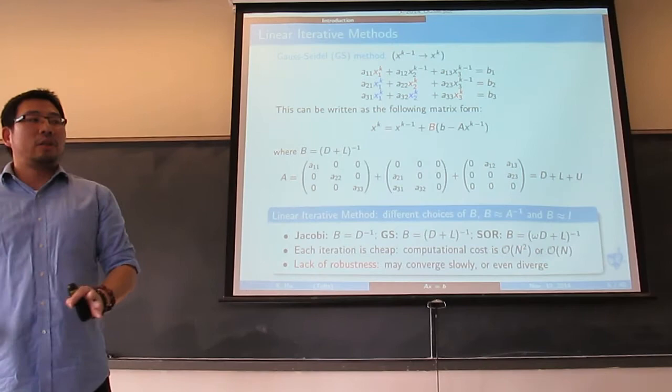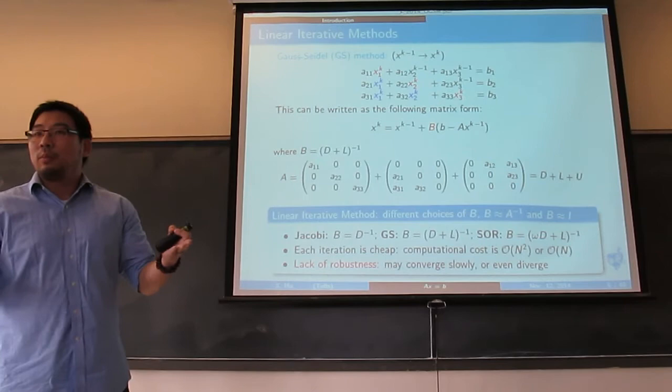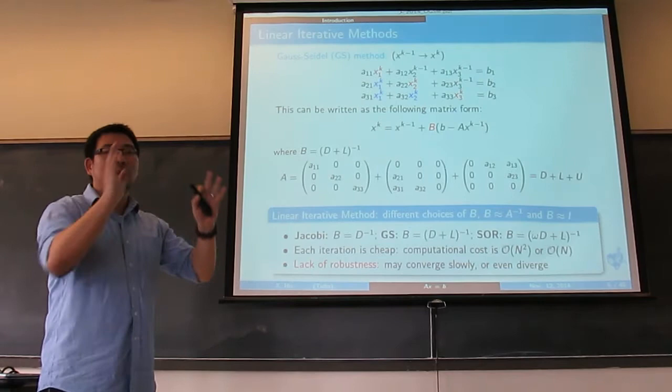But the problem with iterative methods is always the lack of robustness — it's problem dependent. You may have one kind of A where Jacobi or Gauss-Seidel converge very quickly, but if you change A, it might slowly diverge. So robustness is always a problem for iterative methods.